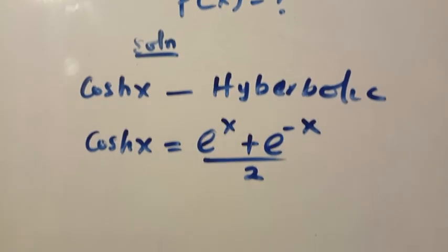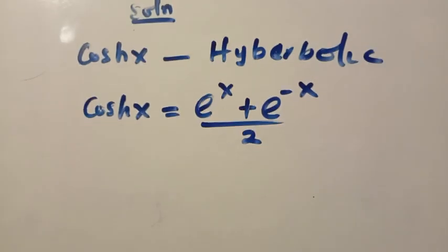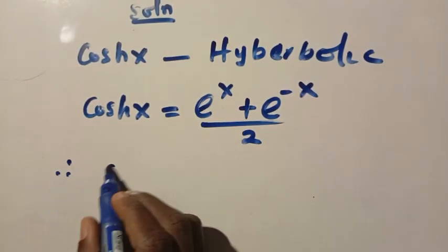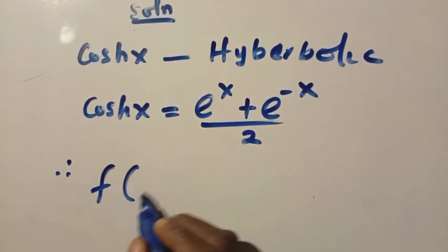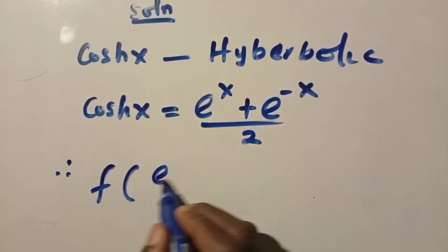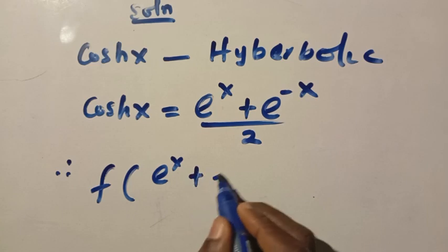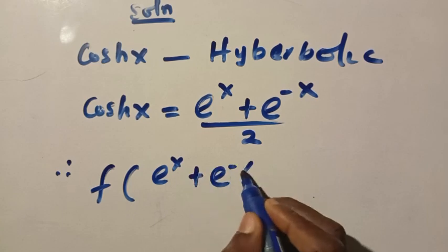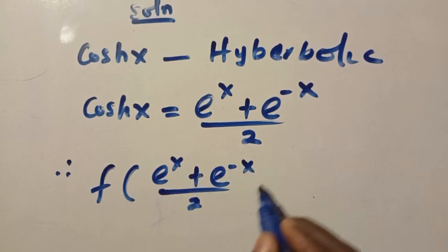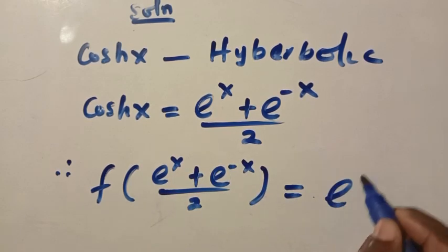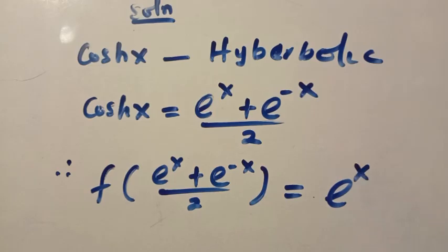Then by replacing the whole of cosh x, we are going to have f of exponential of x plus exponential of minus x divided by two, equals exponential of x.